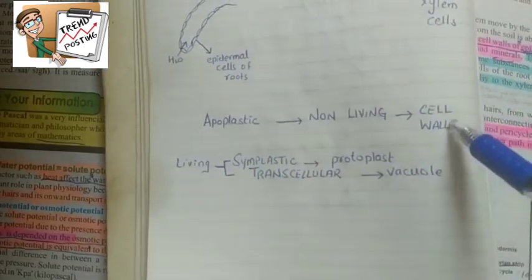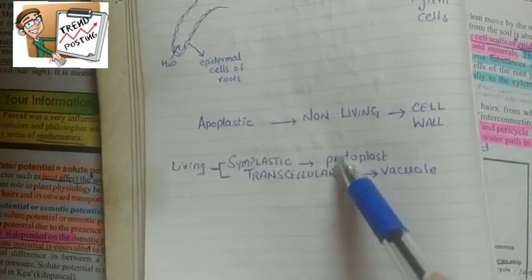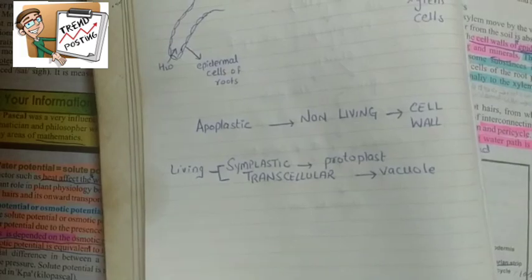You should know that the apoplastic pathway moves water through the cell wall, which is a dead, non-living structure. For symplastic and transcellular pathways, you need to know through which places water will move.